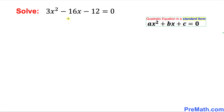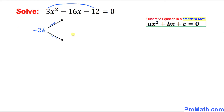Please make sure that this given quadratic equation is in standard form just like I have given over here. So in the very first step I am going to multiply these two end numbers. Three times negative 12 is going to become negative 36.